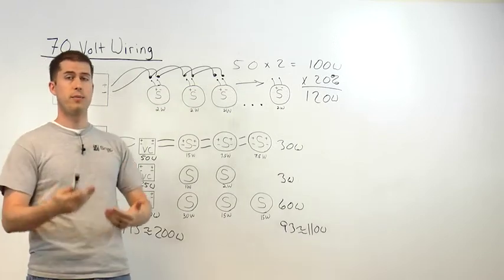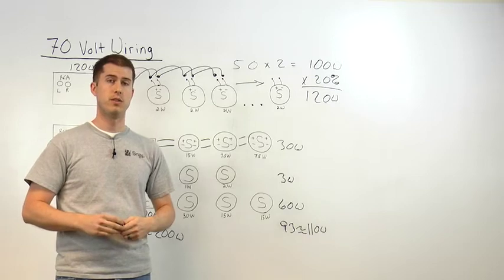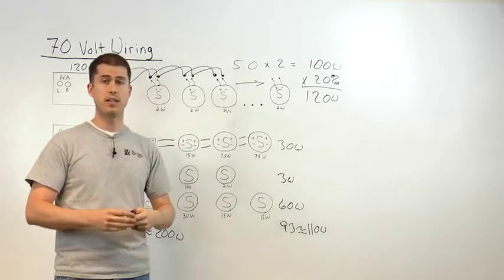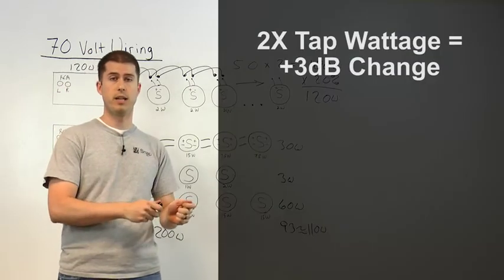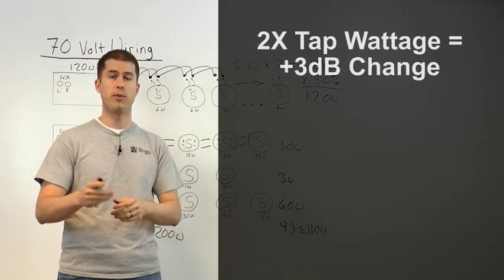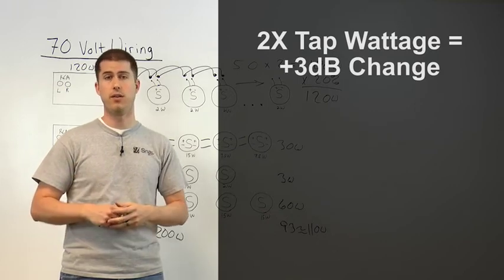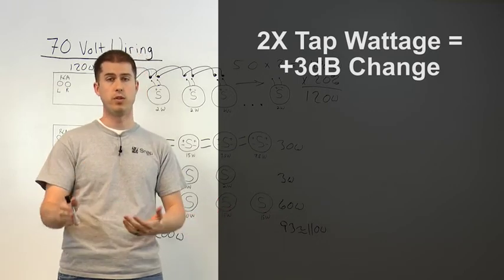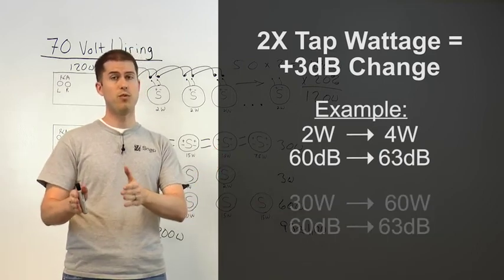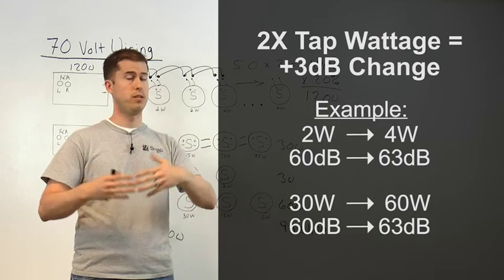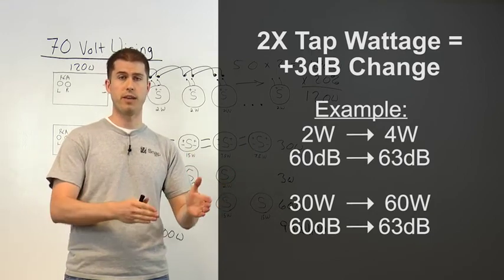Now that we understand the basic wiring and calculations for a 70 volt system, you may be wondering, what tap settings do you use? Well, while that depends on the installation, the really important thing to understand is, every time you double your tap setting, you're only increasing your volume level by 3 dB. While it's a noticeable change, it may not sound twice as loud. So, if you're on a listening level of 60 dB and you go from a 2 to 4 watt tap setting, it's going to go up to 63. Same holds true for 30 to 60, but as you increase the number of speakers that you have, you're going to greatly increase the total amplification that's required.